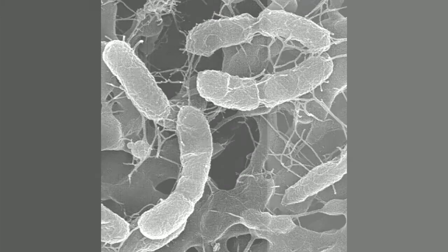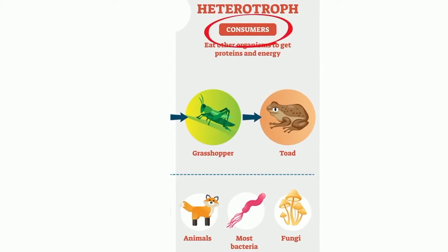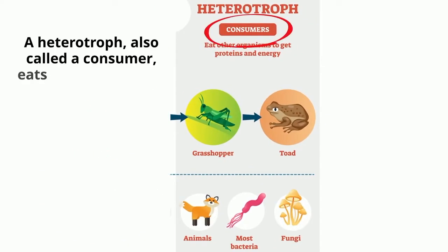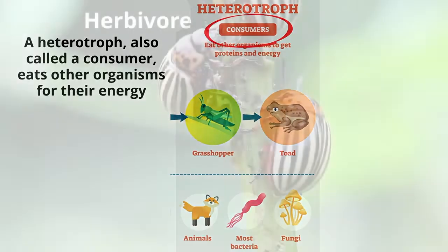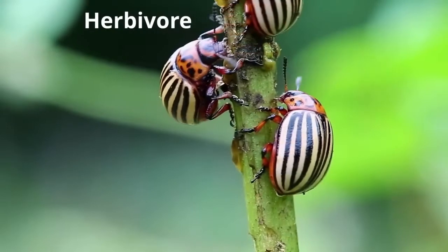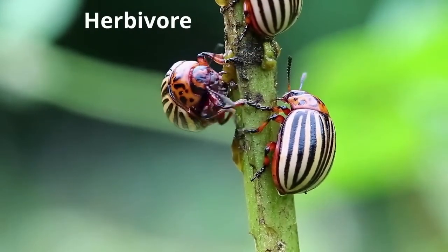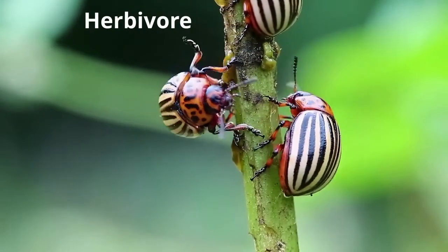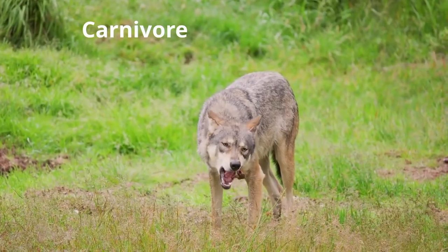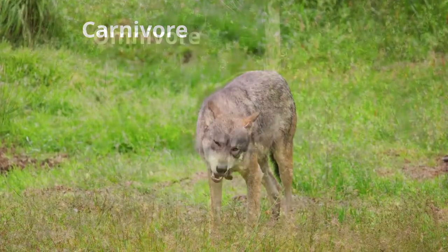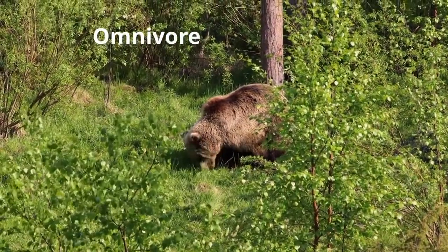A heterotroph, also called a consumer, eats other organisms for their energy. A consumer that eats only plants is called an herbivore. A carnivore, like a wolf, eats other animals. And an omnivore eats both plants and animals.